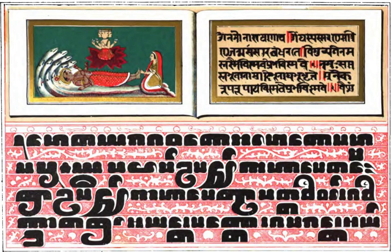Ā-stems and u-stems are either masculine or neuter. The masculine and neuter forms differ only in the nominative and accusative cases. The vocative has the same form as the nominative.